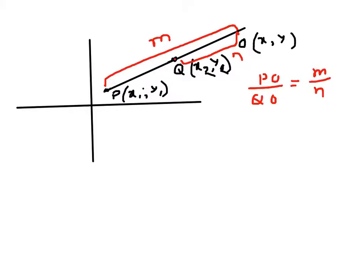If the coordinate of P is x1, y1 and coordinate of Q is x2, y2, how to find the point that can divide these two points externally at the ratio of M and N?